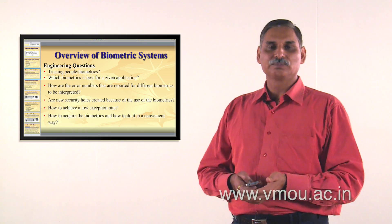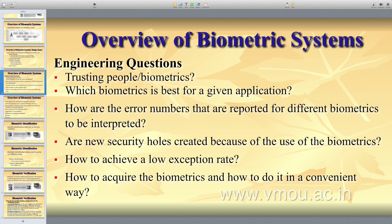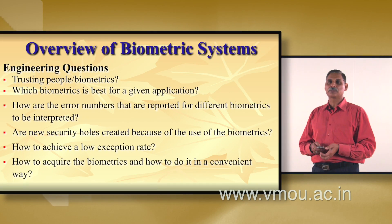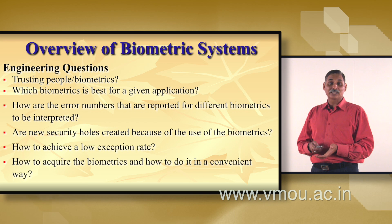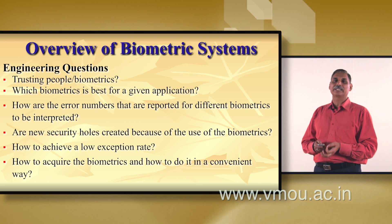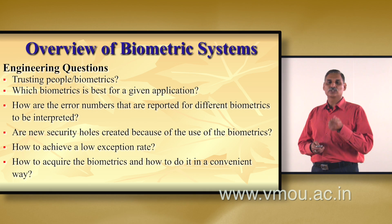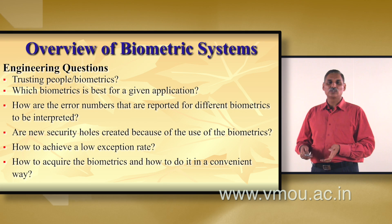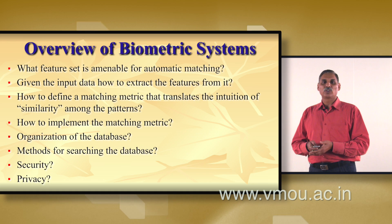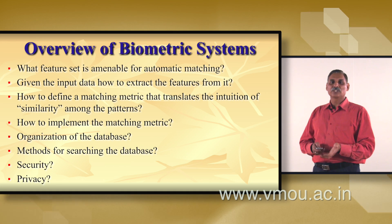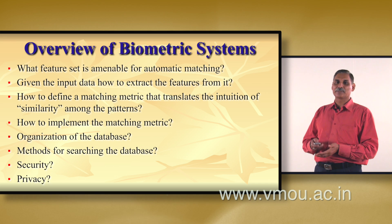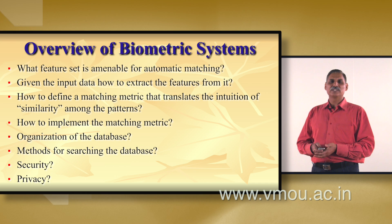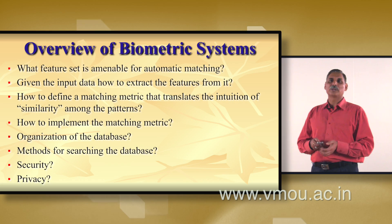From an engineering perspective, questions include: when did biometrics come into existence and can we trust biometrics; which biometric is best for a given application; how are error numbers reported in different biometric systems interpreted; and whether new security holes are created by use of biometrics. Also: how to achieve a low error rate so that genuine users are accepted and impostors are rejected correctly; how to acquire biometrics conveniently; what feature set to use for matching; how to extract features; how to implement the matching algorithm; how to organize and search the database; and of course, security and privacy concerns.